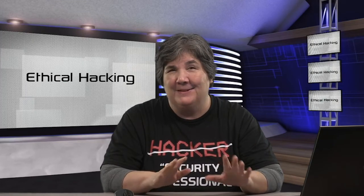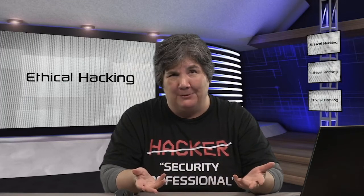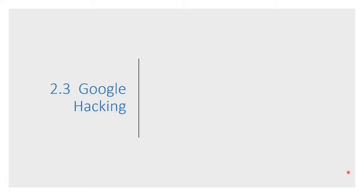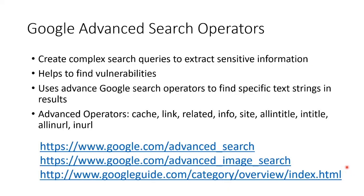Google hacking — sometimes called Google dorking — is simply using advanced search operators with complex search queries to extract sensitive information. It helps you find vulnerabilities because companies accidentally leak documents onto the internet they don't mean to. You use these advanced operators to find specific text strings in results.